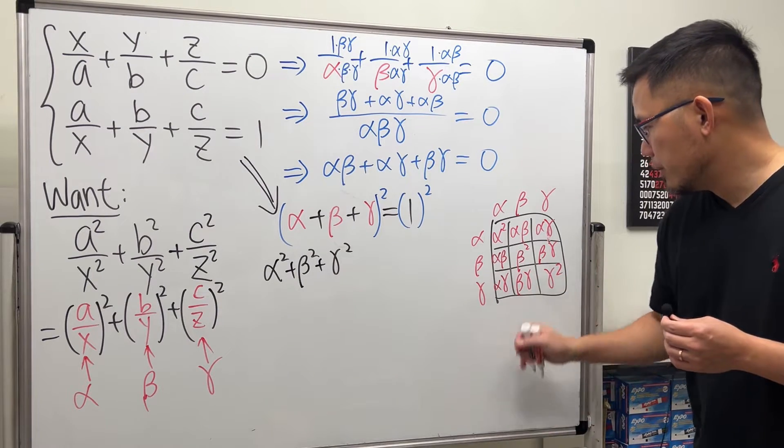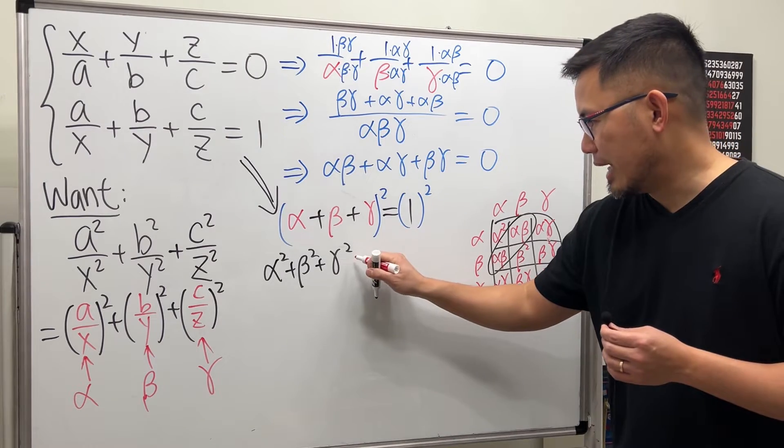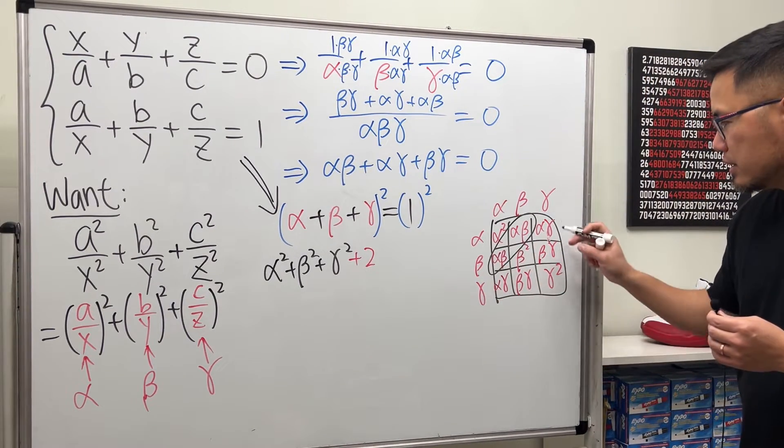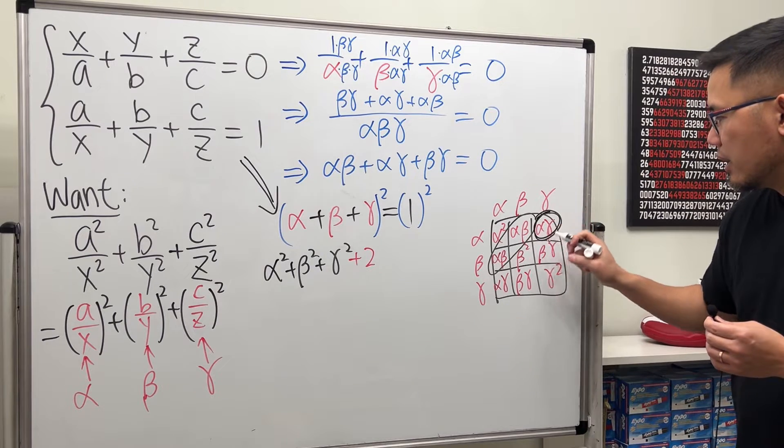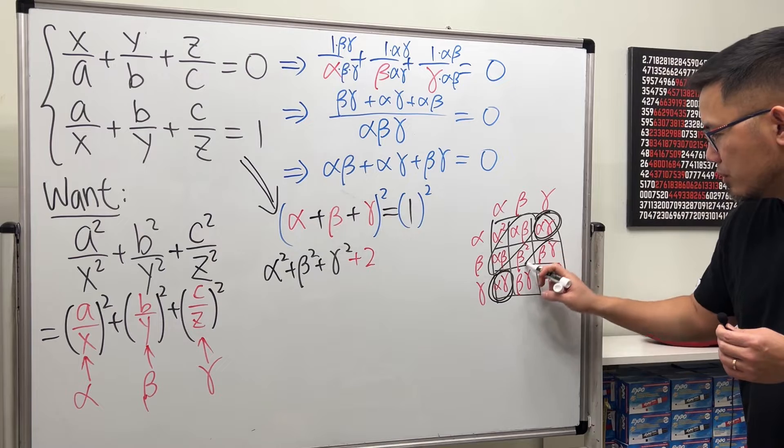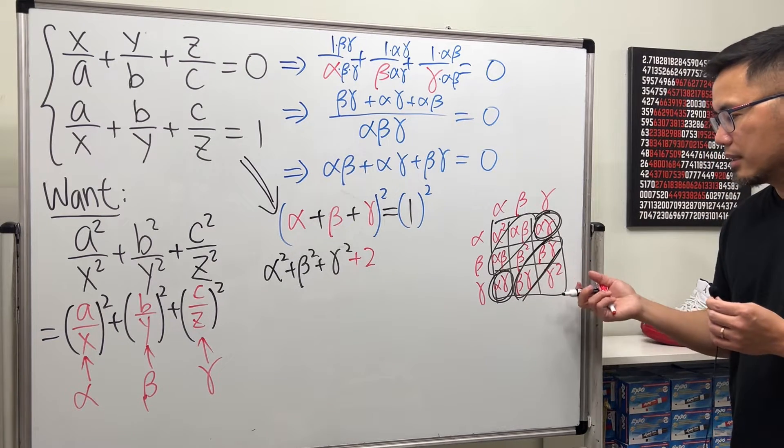This right here we have two of them so we will have to add two alpha beta but notice here we also have two of the alpha gamma likewise we also have two of the beta and gamma so they all happen twice.